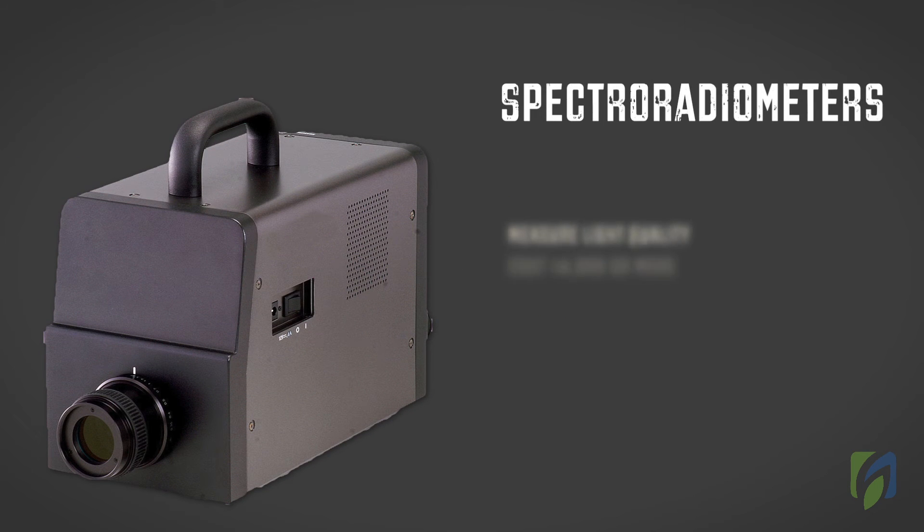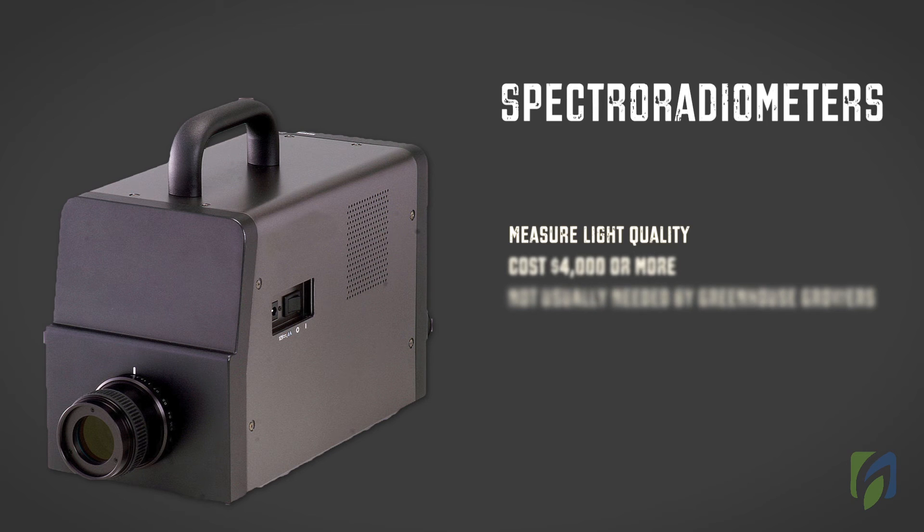Spectroradiometers are used to measure light quality. These instruments can cost $4,000 or more. Greenhouse growers don't usually need to measure light quality because it's relatively fixed for each light source, whether it be natural sunlight or artificial light from lamps.